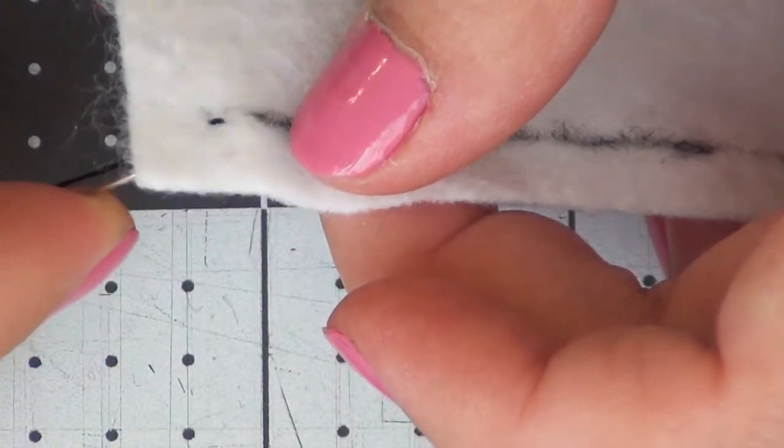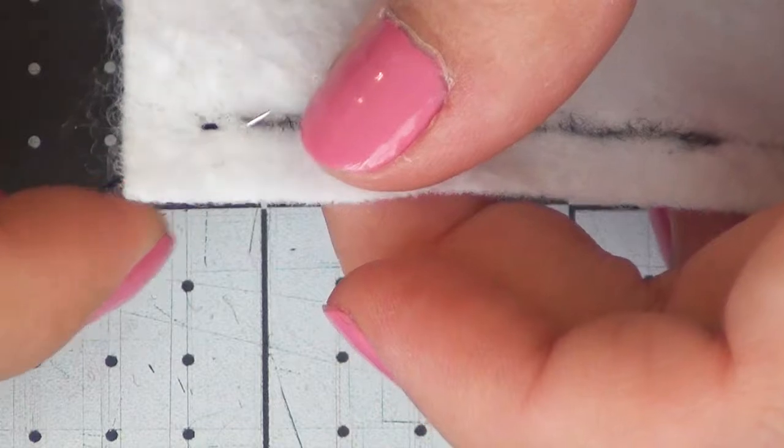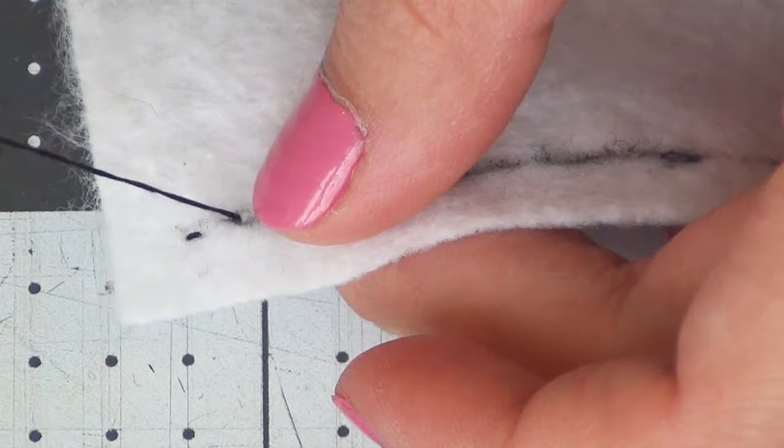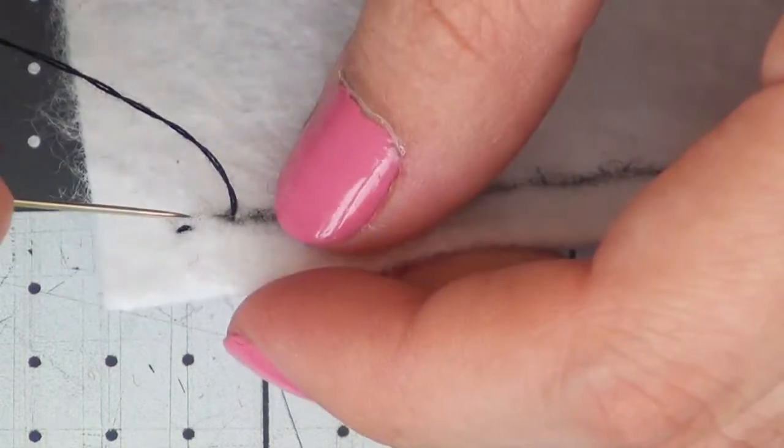Then take your needle and you're going to come up about one eighth inch to one fourth inch depending on the size of your project. Now we're going to start our normal backstitch.